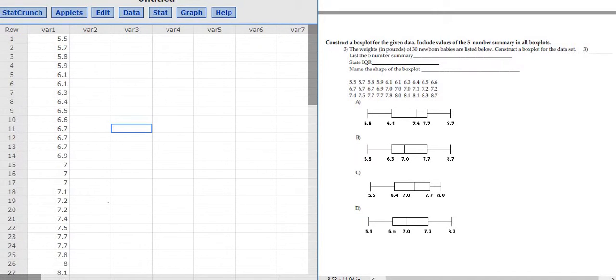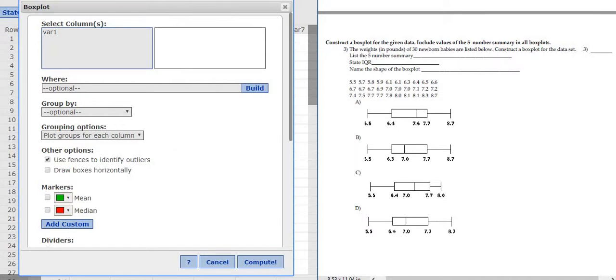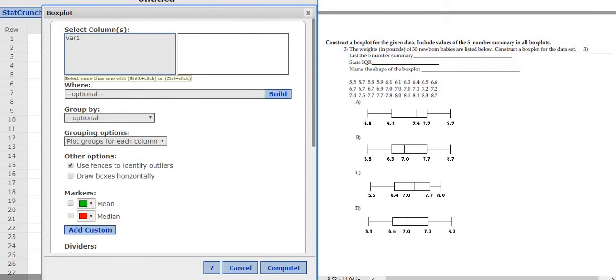Then you go to Graph, and then you go to Box Plot. Then you left-click on Box Plot, and then you select where it says Var 1. You want to uncheck where it says Use Fences to Identify Outliers, then check Draw Boxes Horizontally, and then you click Compute.